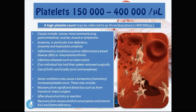A high platelet count is called thrombocytosis — a platelet value of more than 400,000 per microliter. Causes of thrombocytosis include cancer, most commonly lung, gastrointestinal, ovarian, breast, and lymphomas; anemia, in particular iron deficiency anemia and hemolytic anemia; inflammatory conditions such as inflammatory bowel disease or rheumatoid arthritis; and infectious diseases such as tuberculosis.